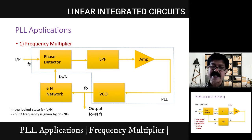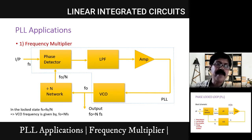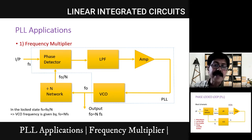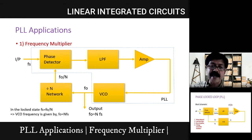At the output of VCO, fo equals N times FS — as simple as that. The free-running frequency or output frequency of the VCO will be a multiplication of the divide-by-N network value. When the system gets locked, these two frequencies become equal, and FS gets equated with fo/N, so the output fo is N times FS. For example, if FS is 1 kHz and N equals 5, I get 5 kHz. This is the frequency multiplier application.